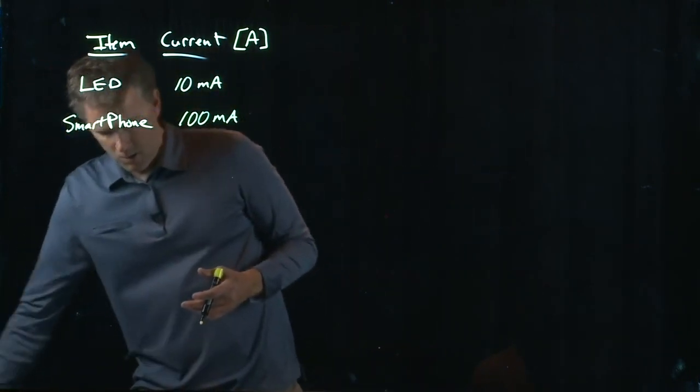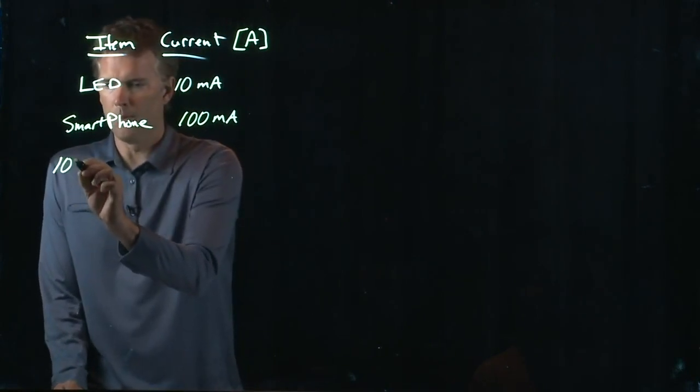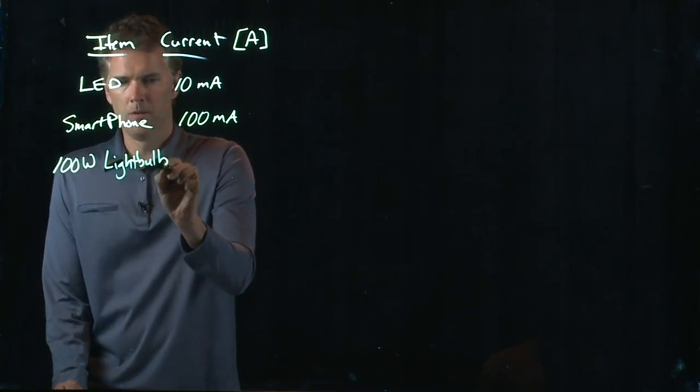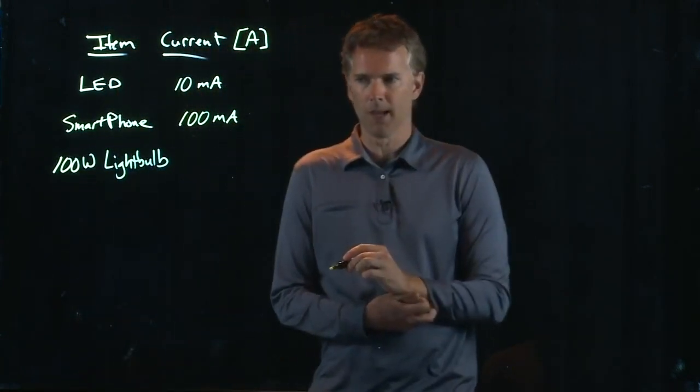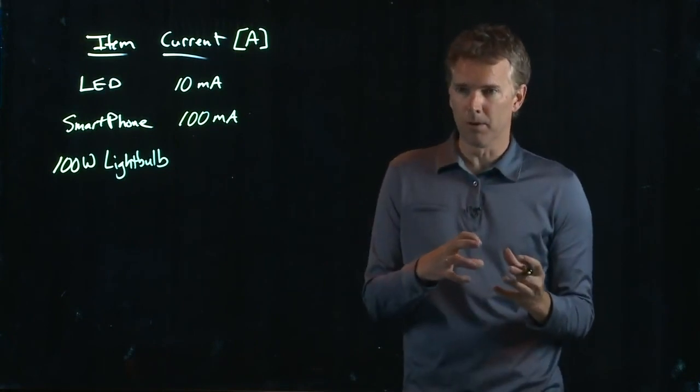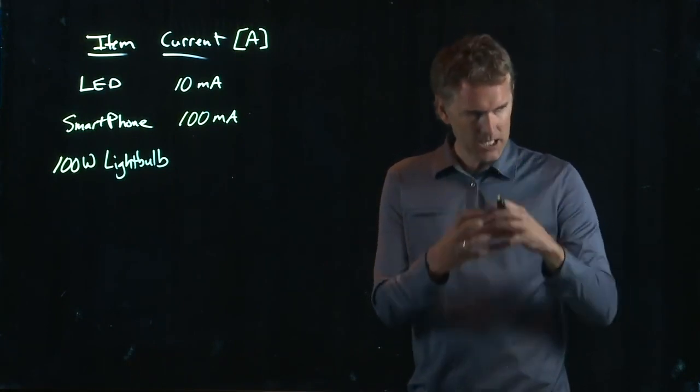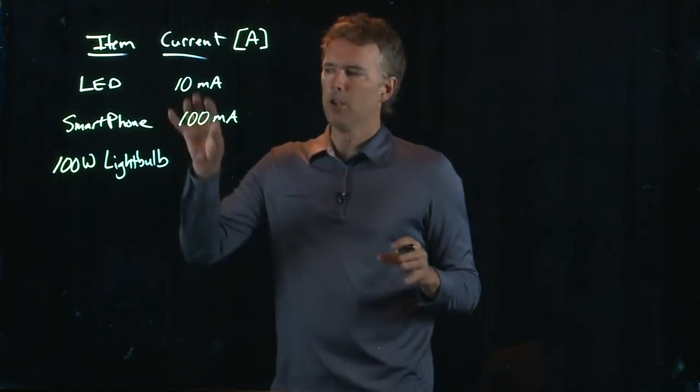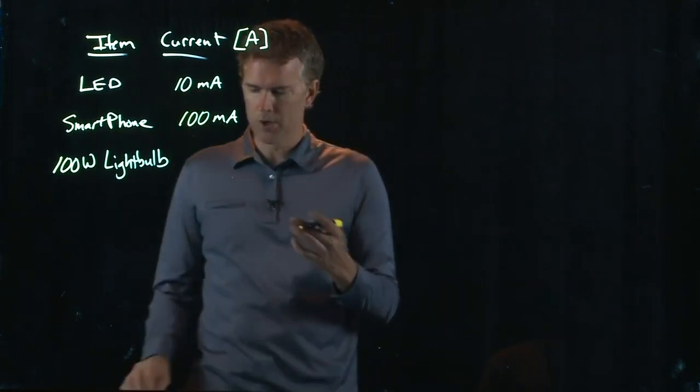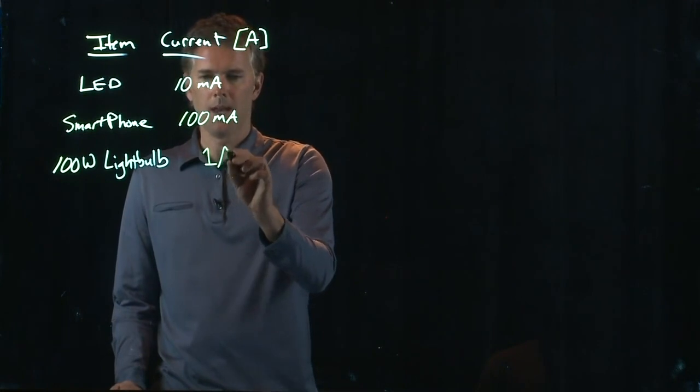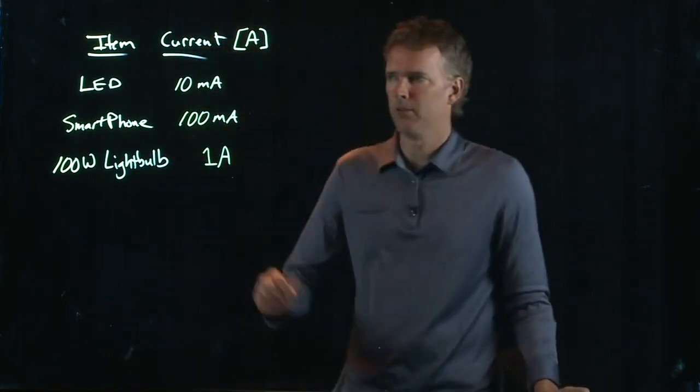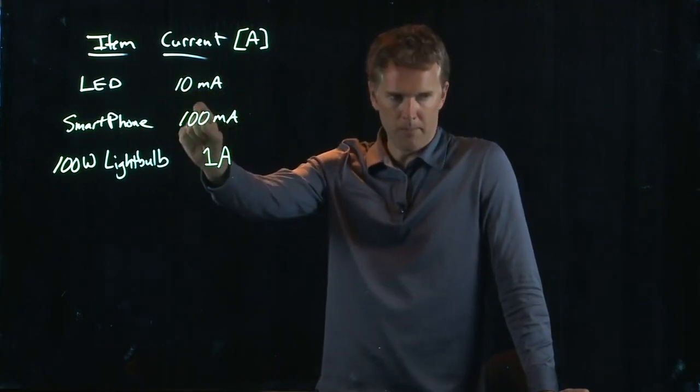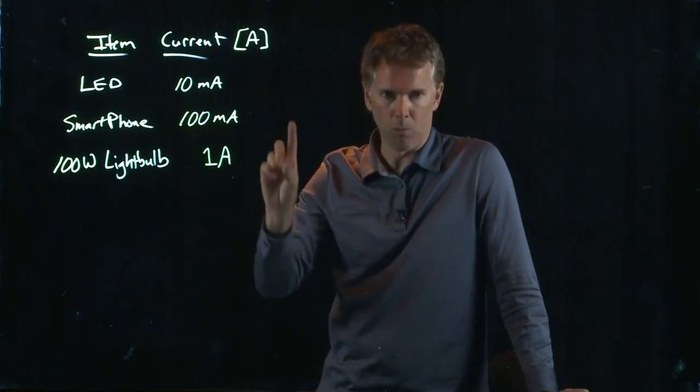What about a light bulb? Let's say you go to Home Depot in the past because you can't buy a 100 watt light bulb anymore. But let's say you buy a 100 watt light bulb, the incandescent light bulb, not the new compact fluorescence, not the new LED. You buy a normal 100 watt light bulb. How much current does that draw? It's about one amp. So we've gone up by an order of 10 each time. I got 10 milliamps, 100 milliamps, a thousand milliamps, which is one amp.